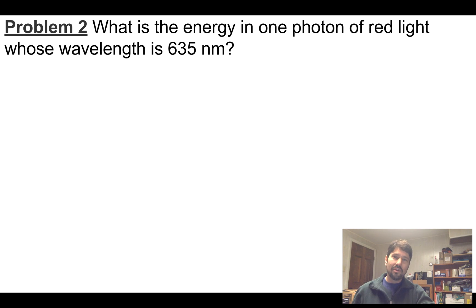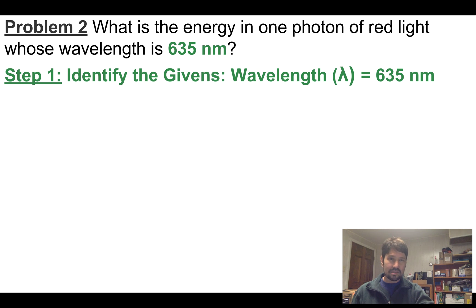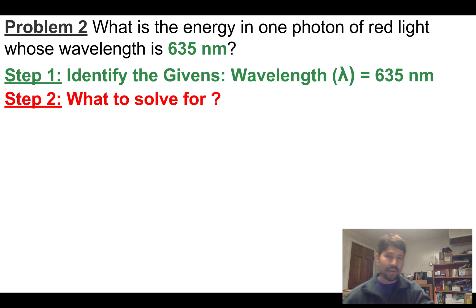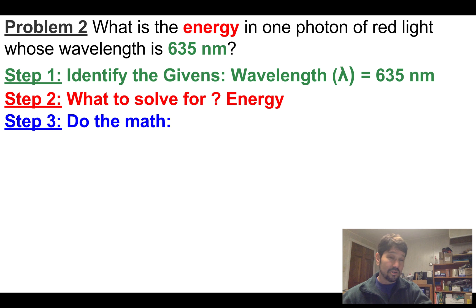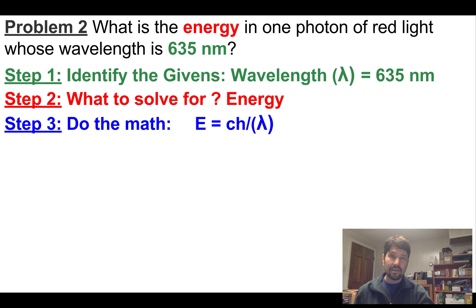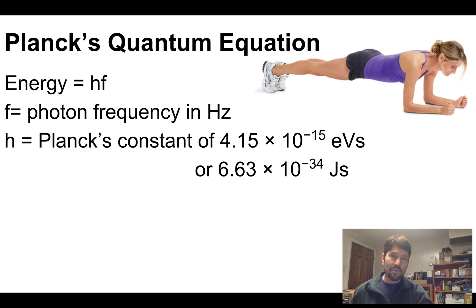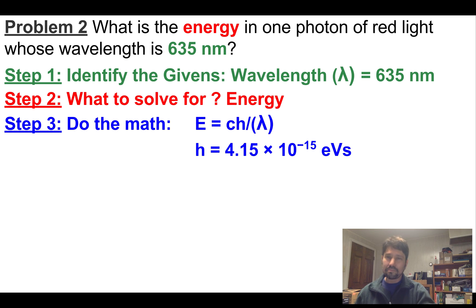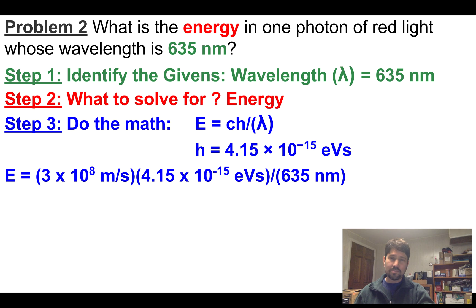Question number two. What's the energy of one photon of red light whose wavelength is 635 nanometers? Identify the givens: 635 nanometers is our wavelength. What are we going to solve for? We're going to solve for energy. So to do the math, we'll need a formula. In this case, we've got wavelength and we're solving for energy. So this guy looks like our formula to go with. We're going to need Planck's constant. We'll use the electron volts because we're radiographers and we're always talking about kVp. Now we just plug and chug.